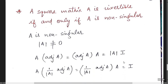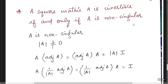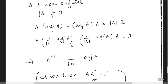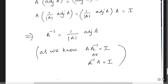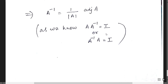The last topic: a square matrix A is invertible — meaning we can find its inverse — if and only if A is non-singular, i.e., det(A) ≠ 0. Since A × adj(A) = det(A) × I, dividing both sides by det(A) gives A × (1/det(A)) × adj(A) = I. Since the product of two matrices equals the identity, one matrix is the inverse of the other. Therefore, A inverse equals (1/|A|) × adj(A). We will apply all these results in the next video with exercises.